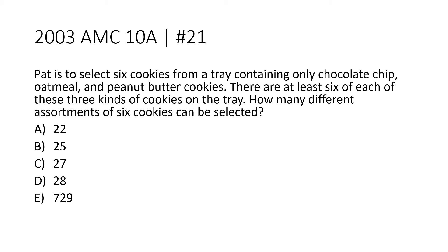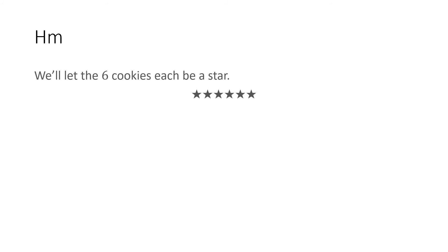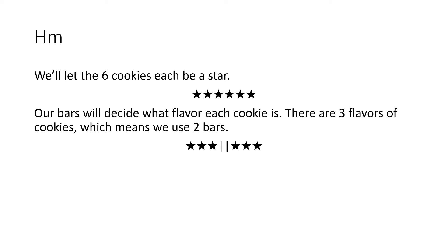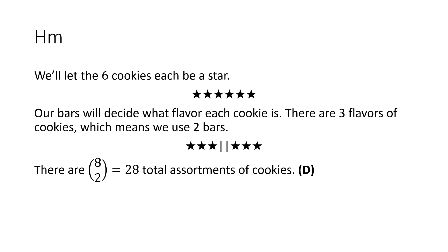Let's do an example from the AMC 10. Pat is to select 6 cookies from a tray containing only chocolate chip, oatmeal, and peanut butter cookies. There are at least 6 of each of these 3 kinds of cookies on the tray. How many different assortments of 6 cookies can be selected? A) 22, B) 25, C) 27, D) 28, E) 729. We'll let the 6 cookies each be a star, and our bars will decide what flavor each cookie is. There are 3 flavors so 2 bars, hence the answer is 8 choose 2, or 28. That is D and we are done with this question.